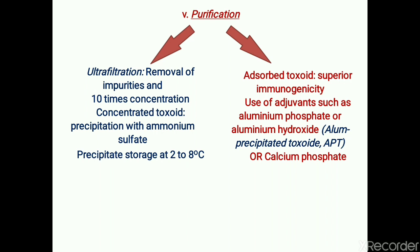The second method of purification is treatment with adsorbents, called adsorbed toxoid. This preparation has the advantage of superior immunogenicity. Adjuvants such as aluminum phosphate or aluminum hydroxide are used, and this type of preparation is called APT — alum precipitate toxoid. Sometimes calcium phosphate may also be used.